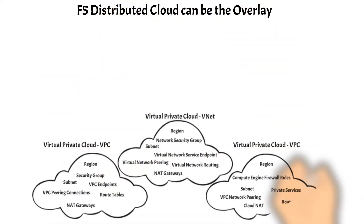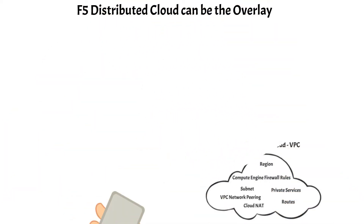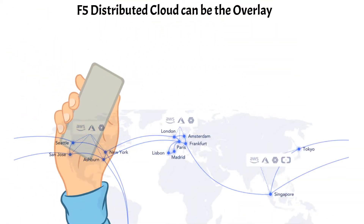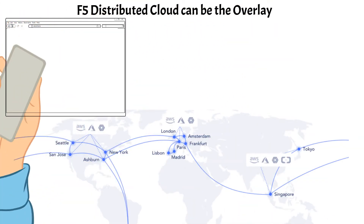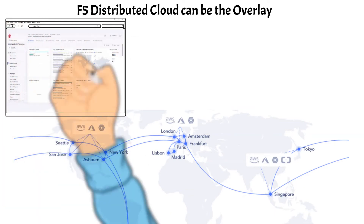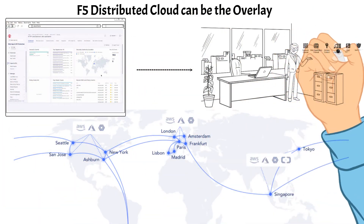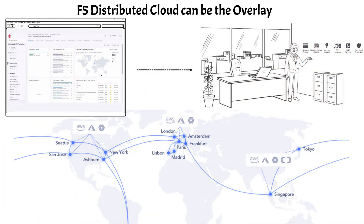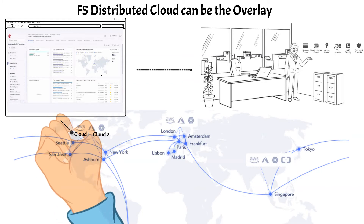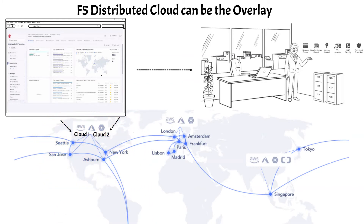F5 distributed cloud can be an overlay on top of all the networks to allow for configuration in one location and simplify the security stack. The F5 distributed cloud console gives the ability to configure an application in cloud 1 and cloud 2 through the same GUI in a browser in a seamless manner.